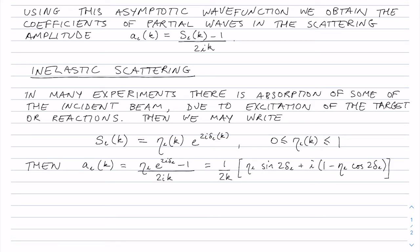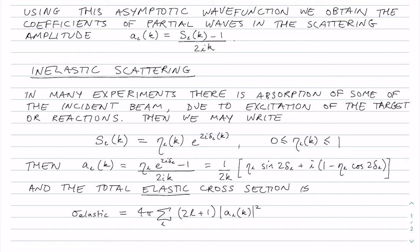So here I've broken A_L into an imaginary part and a real part which depends on delta and eta. Even though we've modified the S matrix to include this eta, we're still going to have an elastic and an inelastic contribution to the total cross section. So this is going to be the elastic contribution to that cross section.